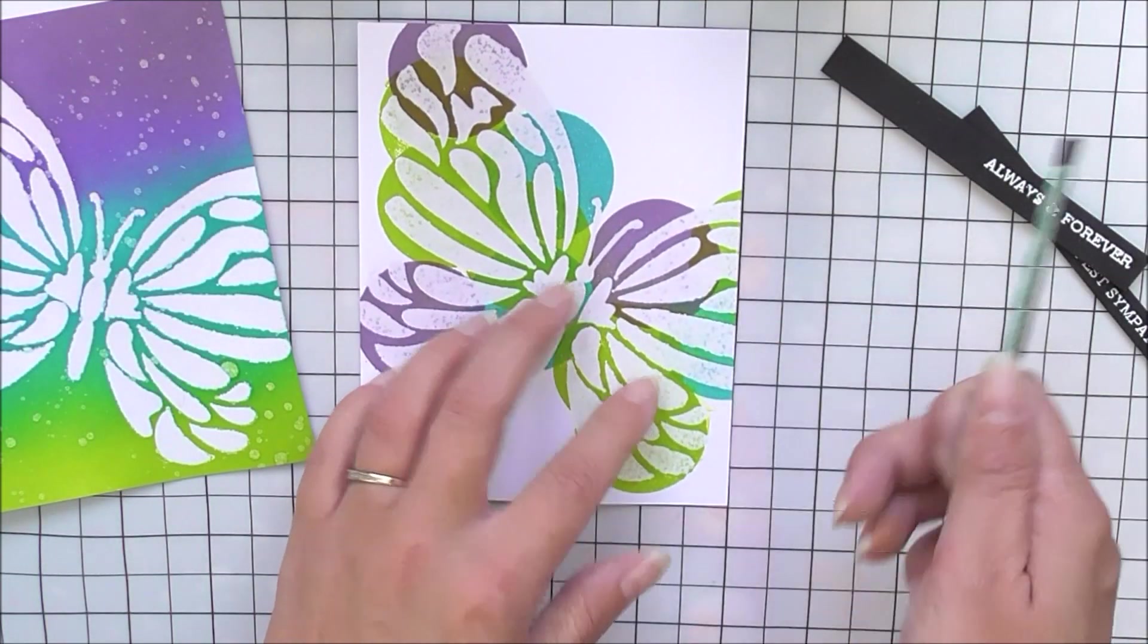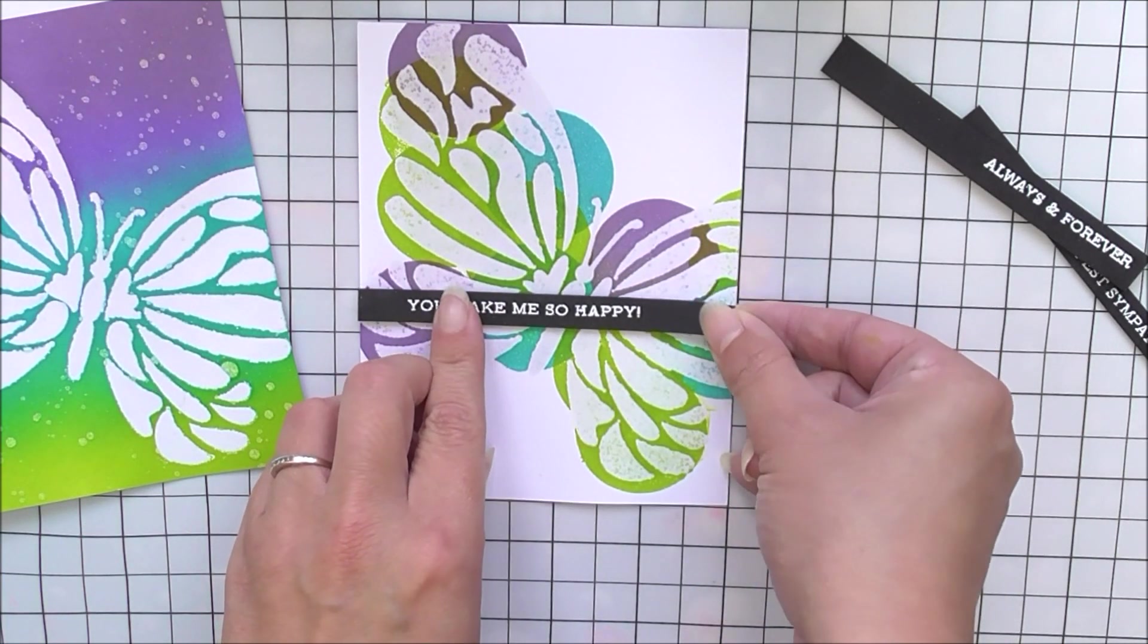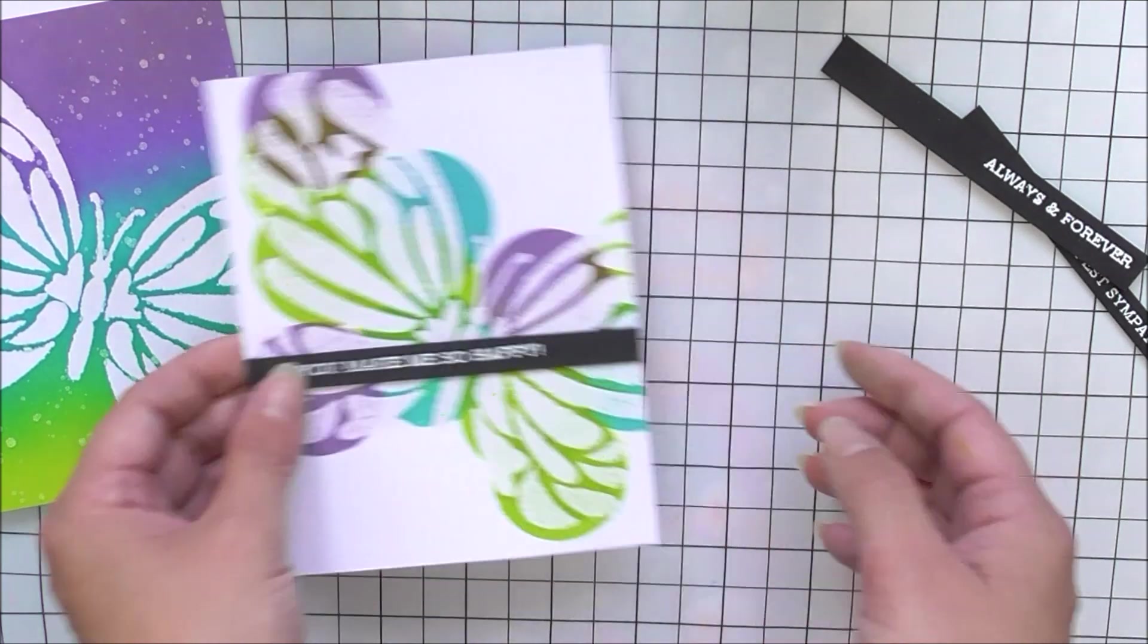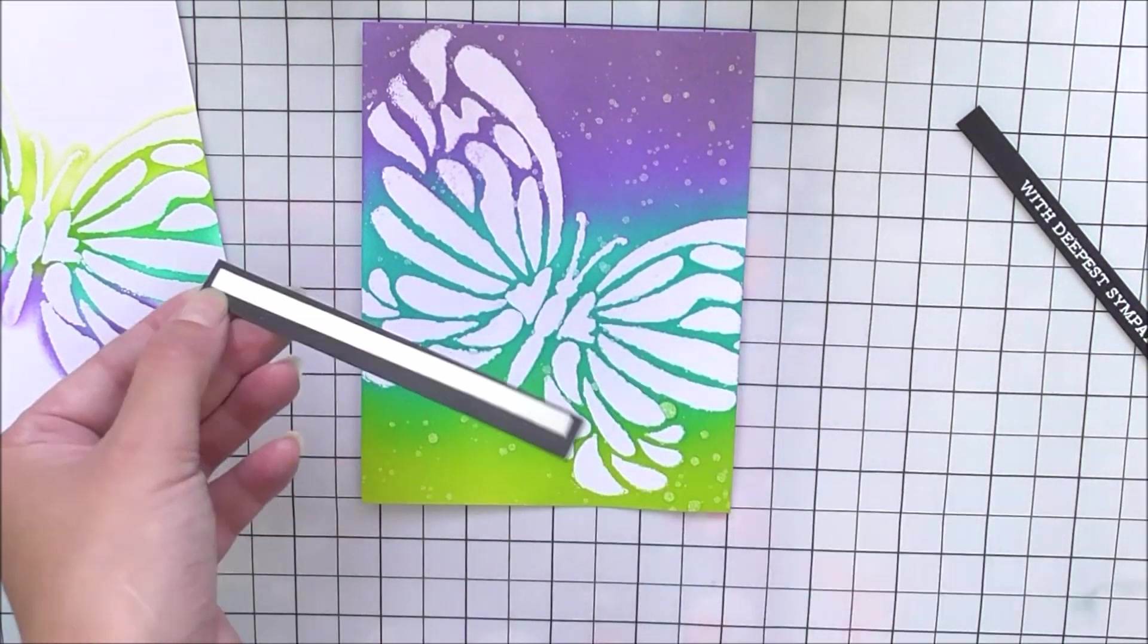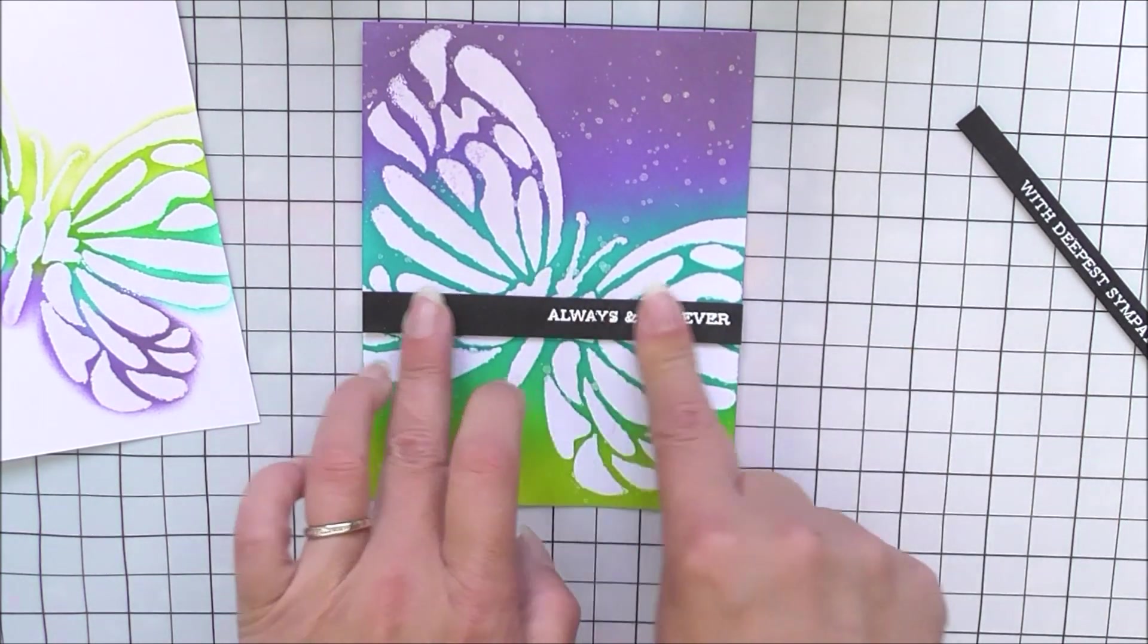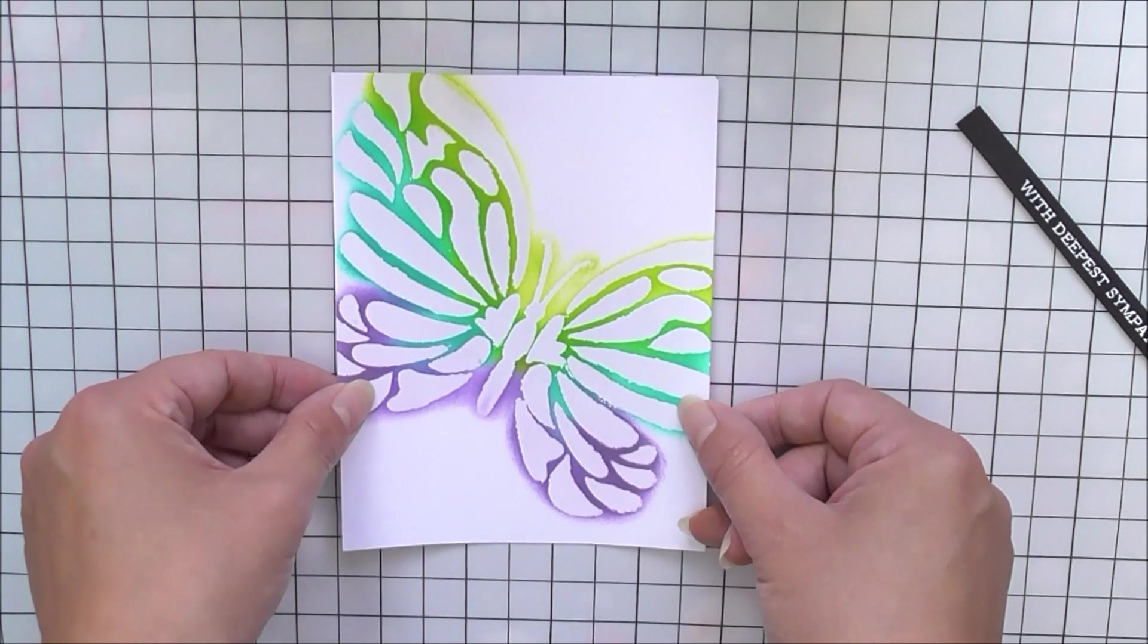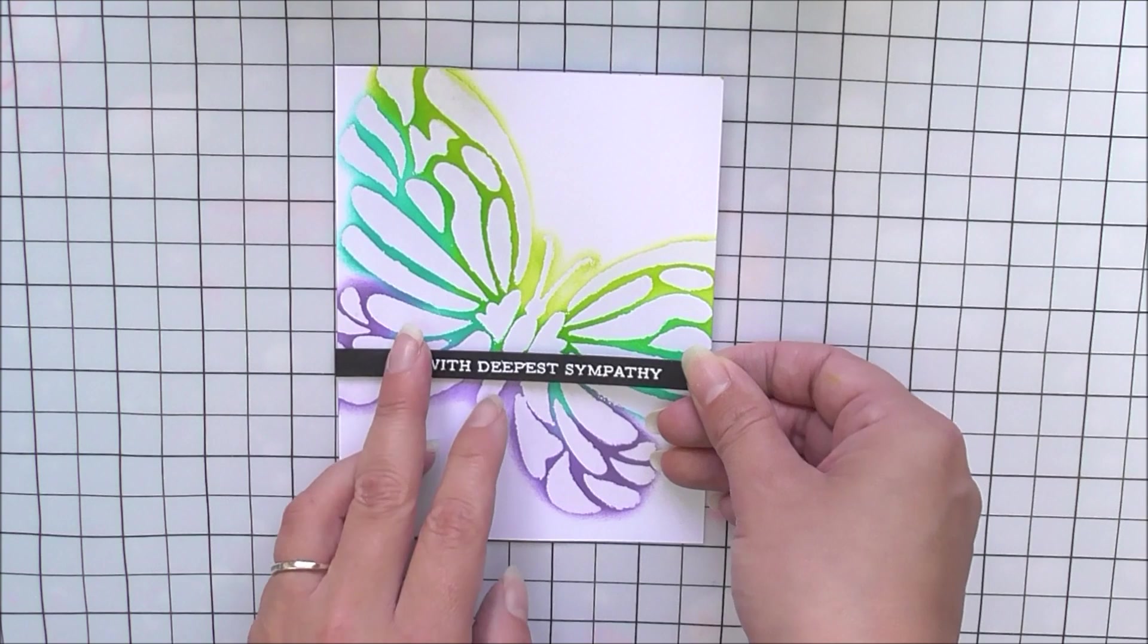Once I have cut those strips, I'm then just going to add a little bit of foam tape behind each of them, and I'm just going to pop them onto my panels. I do use the guideline that's on my little mat that's below me just to make sure that they're lovely and straight. You could really play around with these if you wanted to. Maybe have some diagonal ones, but I just wanted to keep these really quite simple, so that's why I've done them nice and straight.